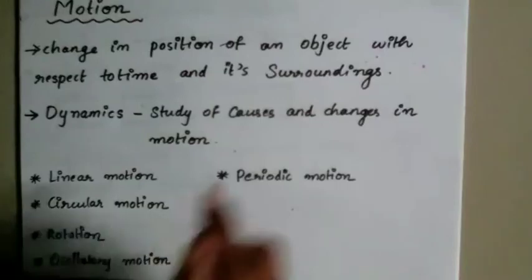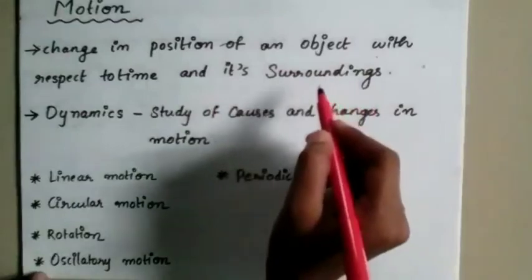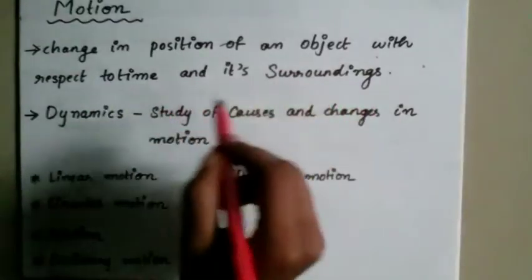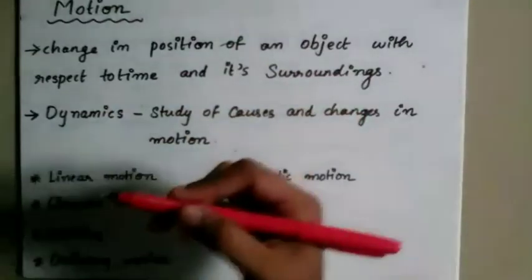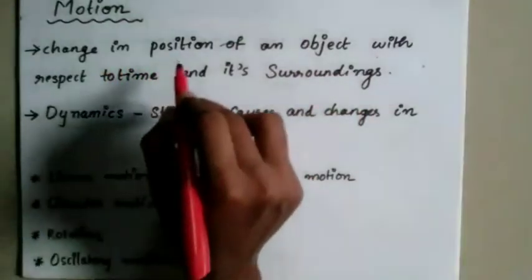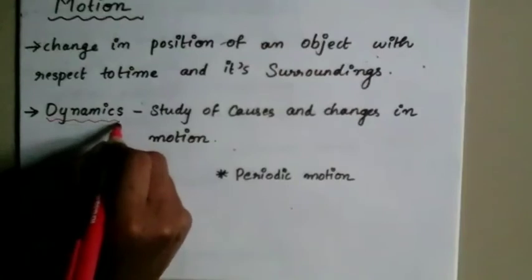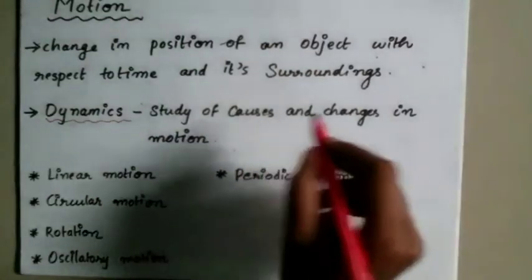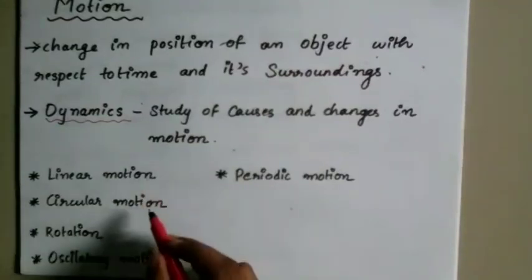Motion is the change in position of an object with respect to time and its surroundings. When an object changes position in a direction over time, that is motion. The study of motion itself is kinematics, while the study of causes of changes in motion is dynamics.